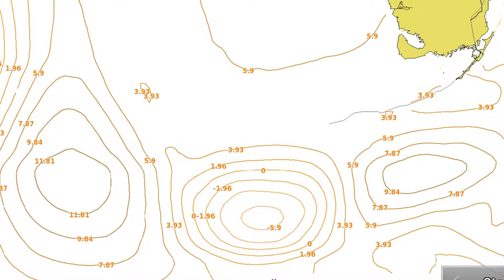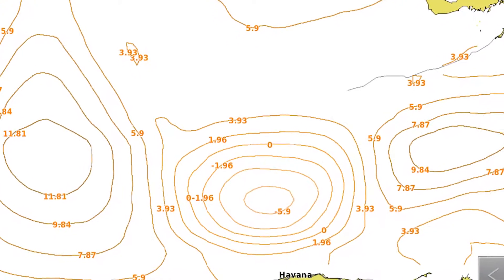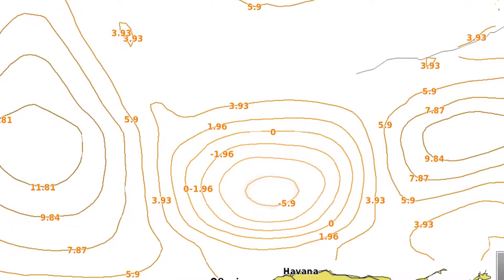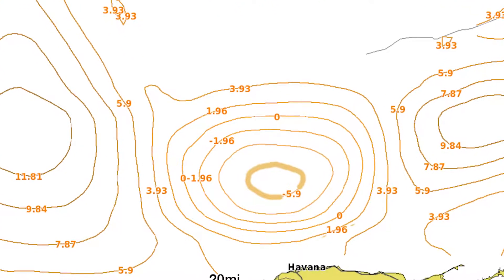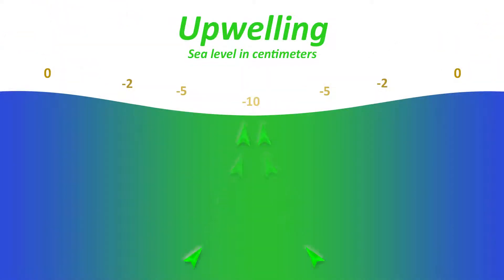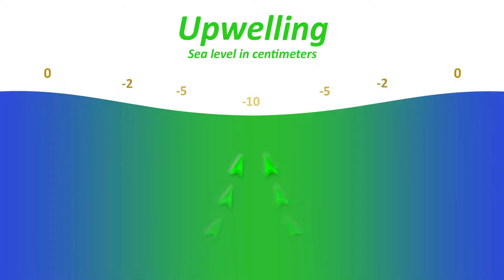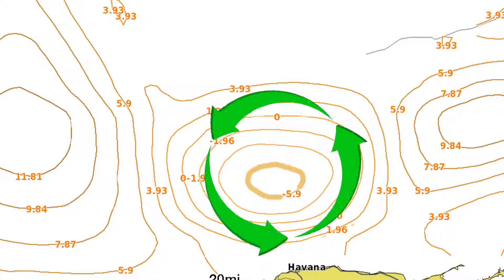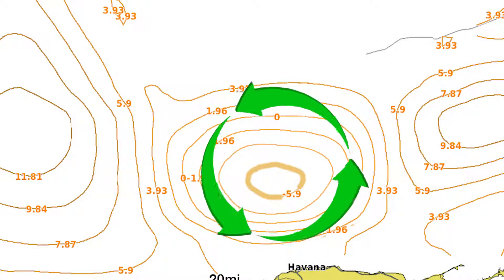By contrast, the center of an upwelling will be a circle with negative numbers, or a low eddy, represented with lighter orange lines. In this area, the sea surface height is at a low point and will be beginning to rise, bringing cooler, nutrient-rich water up from the bottom. An upwelling eddy produces a counterclockwise current.